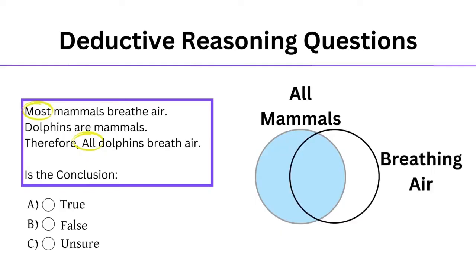The second sentence is Dolphins are mammals, so dolphins fit entirely into the mammal circle. The conclusion statement says all dolphins breathe air. Looking at our Venn diagram, we know all dolphins are mammals, and most mammals breathe air. The problem is that our conclusion says all, but our diagram shows all with some exceptions. These exceptions make all the difference and lead our answer to be uncertain.